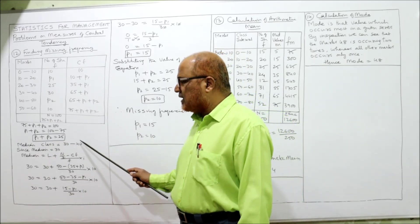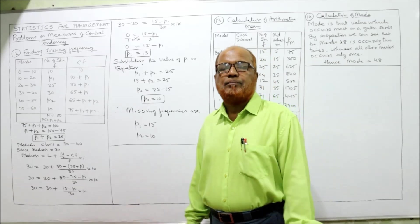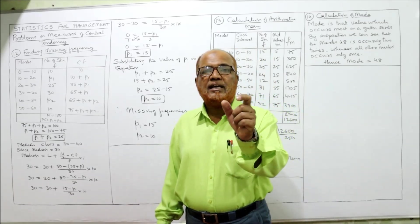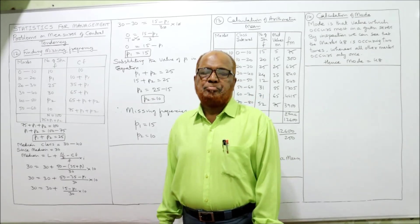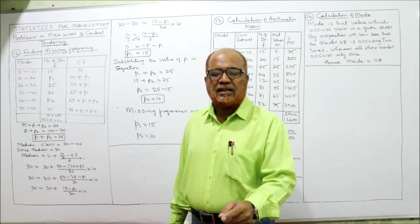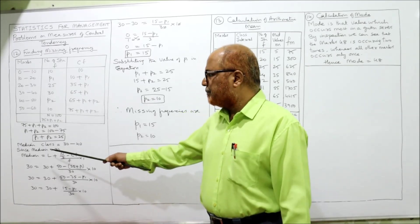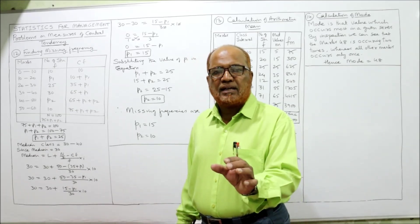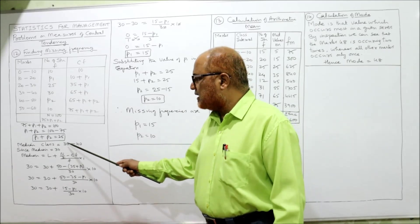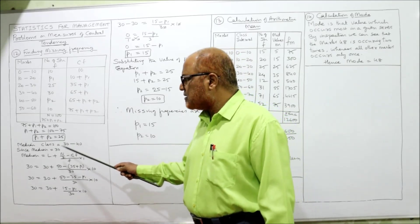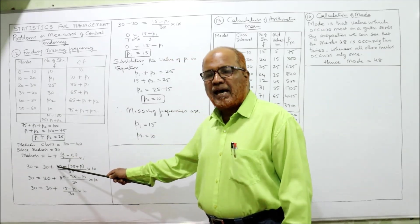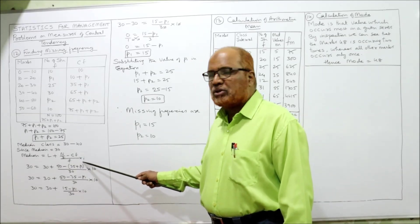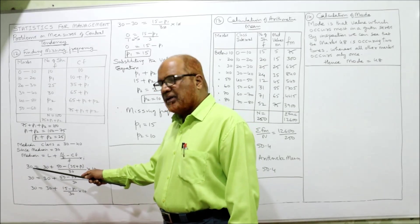The median class is 30–40. Although not stated directly, since the median is given as 30, we take the median class as 30–40. The median formula is: Median = L + [(n/2 − cf) / f] × i. We substitute: median = 30, lower limit L = 30, n/2 = 100/2 = 50.